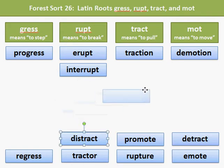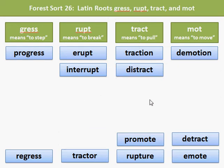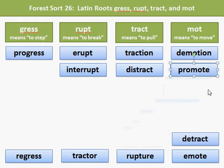Distract includes the root tract, which means to pull. So to distract someone is to pull their attention away. Promote includes the root mote, which means to move. To promote is to move forward. If you promote someone in a company, you move them forward to a position of higher rank.